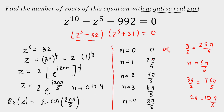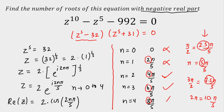Now checking quadrants: n=0 (angle 0) is rejected. n=1 (angle 2π/5): since 2 < 2.5, we are in the first quadrant — rejected. n=2 (angle 4π/5): since 4 is between 2.5 and 5, we are in the second quadrant — accepted, negative real part. n=3 (angle 6π/5): since 6 is between 5 and 7.5, we are in the third quadrant — accepted. n=4 (angle 8π/5): since 8 > 7.5, we are in the fourth quadrant — rejected. So from z^5 = 32, there are 2 roots with negative real part.